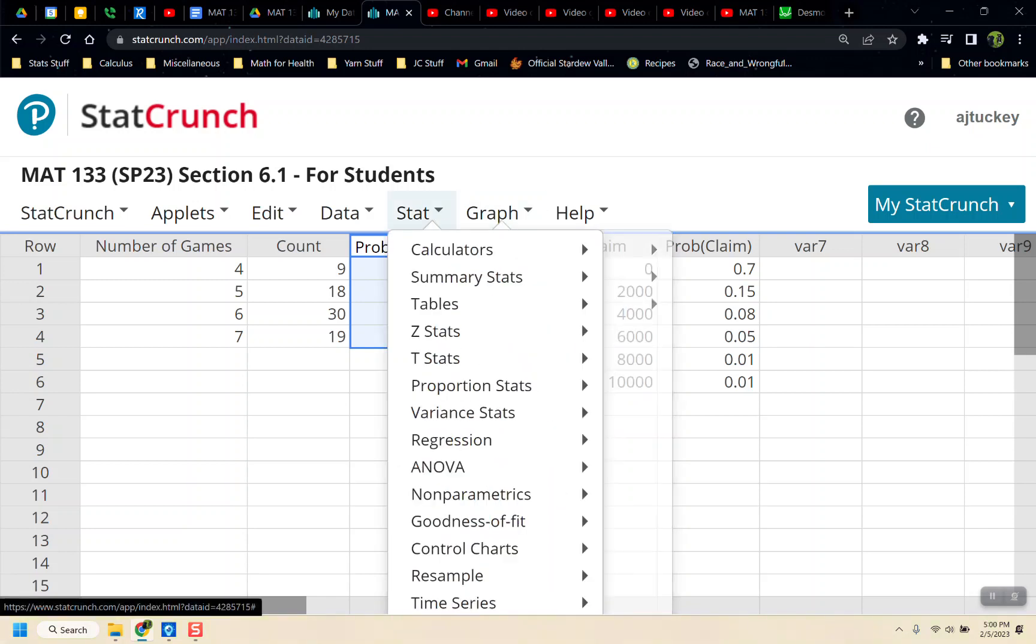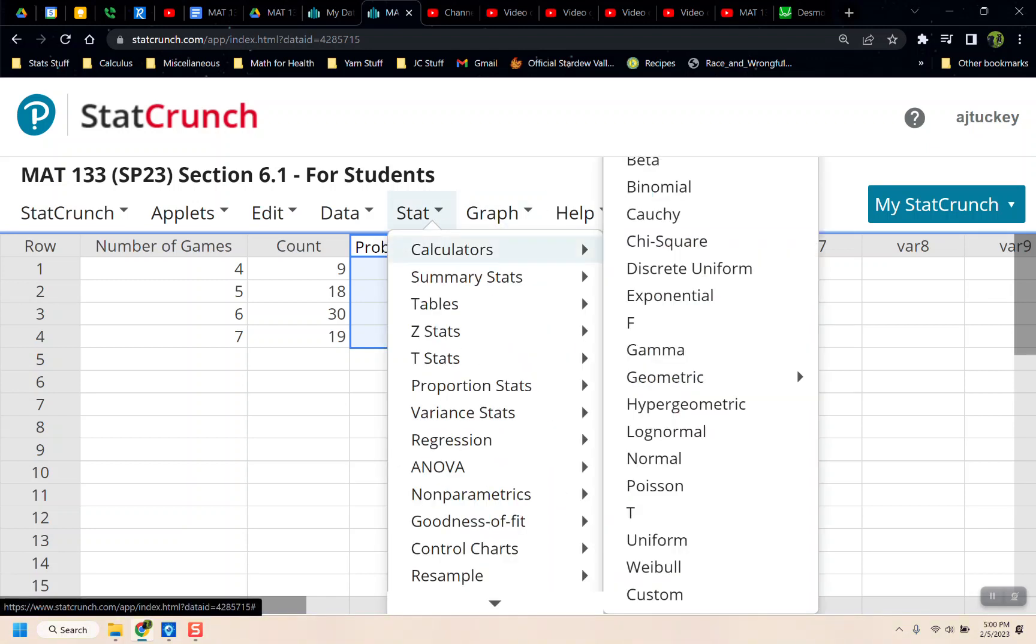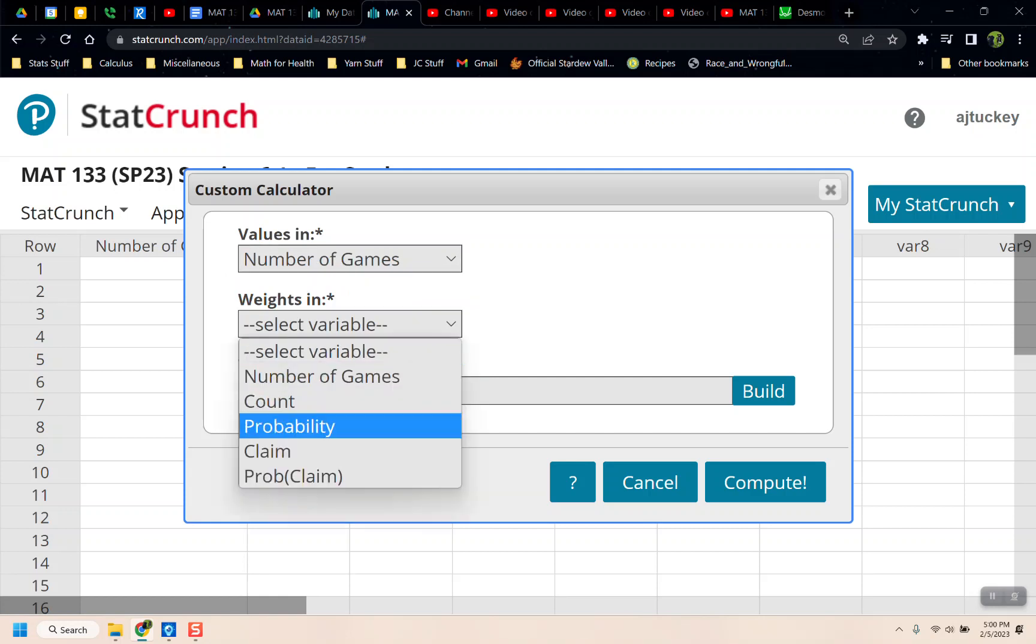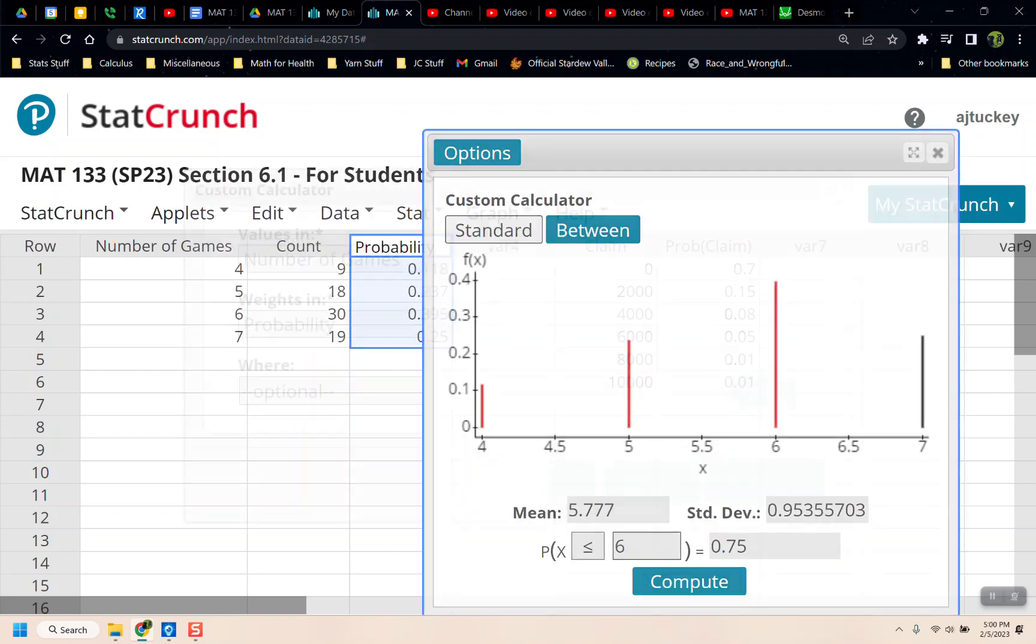So you can go to Stat, Calculators, and it's the very bottom, it's the custom calculator. Your values are your number of games, and your weights are your probability. And then you say Compute. And there they are.